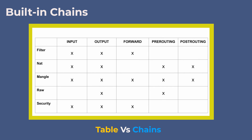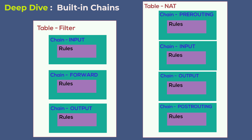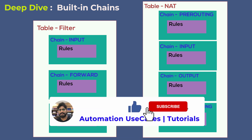On your screen is a depiction of the built-in chains used by each table. The filter table has INPUT, FORWARD, and OUTPUT chains. The NAT table uses INPUT, OUTPUT, PREROUTING, and POSTROUTING. The mangle table uses all five default chains. The raw table consists of OUTPUT and PREROUTING chains. The security table uses INPUT, OUTPUT, and FORWARD chains. Unlike tables and chains, there are no default rules. And unlike tables, you can create your own chains.